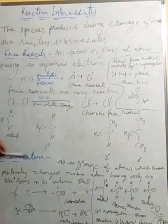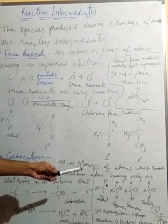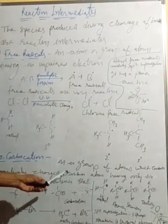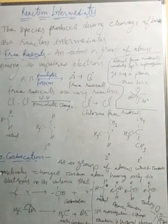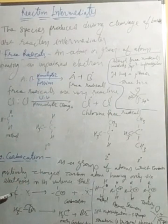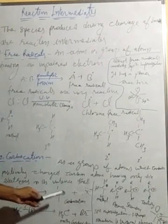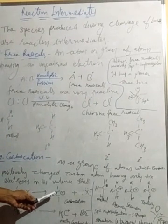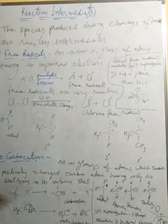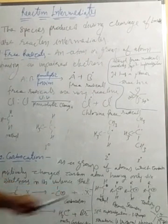The second type of reaction intermediate is the carbocation, which is a group of atoms containing a positively charged carbon atom having only six electrons in its valence shell. For example, when carbon and halogen share one pair of electrons, the halogen gains one electron, and the carbon develops a positive charge — meaning the carbon donates its electron to the halogen atom, forming a carbocation.